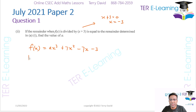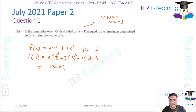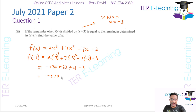We substitute minus 3 into f of x: a times minus 3 cubed plus 7 times minus 3 squared minus 7 times minus 3 minus 3. Minus 3 cubed is minus 27, so we get minus 27a. Minus 3 squared is 9, and 9 times 7 is 63. Minus 7 times minus 3 is plus 21. So we have minus 27a plus 63 plus 21 minus 3, which gives minus 27a plus 81.